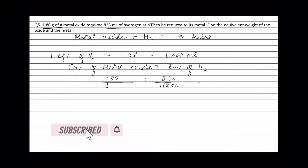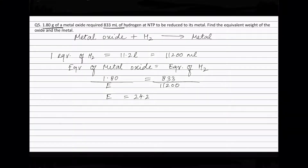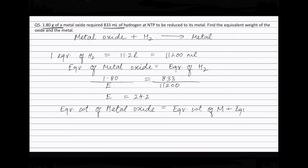Solving this, we get the equivalent weight of the metal oxide equal to 24.2. Now, equivalent weight of metal oxide equals equivalent weight of metal plus equivalent weight of oxygen. Equivalent weight of metal oxide is 24.2 and equivalent weight of oxygen is 8. So equivalent weight of metal equals 24.2 minus 8, which equals 16.2.